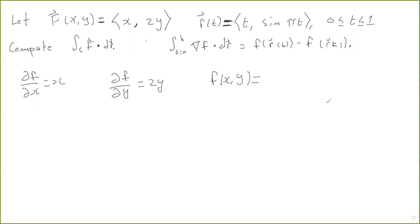So the guess should be that f equals x squared over 2, plus an antiderivative for 2y, which is y squared. Now is it true that the gradient of this equals (x, 2y)? Well, if you take the derivative with respect to x you get x, and if you take the derivative with respect to y you get 2y. So yes, the gradient of little f is equal to big F — because the partial of f with respect to x is x, and the partial of f with respect to y is 2y.